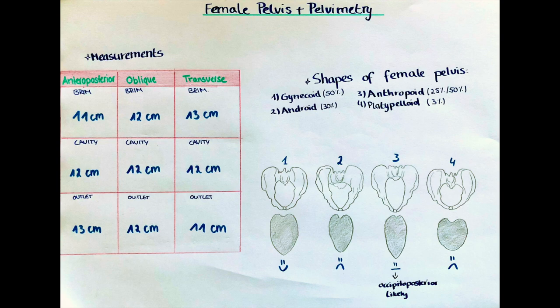The outlet is rectangular in shape. The anteroposterior measurement is between the lower border of the symphysis pubis and the sacrococcygeal joint and usually measures 13 cm. The right and left oblique is usually around 12 cm and is measured from the sacrospinous ligament to the foramen obturatorium. The transverse diameter is the distance between the ischial spines and is usually 11 cm.